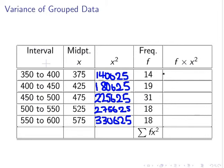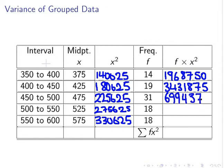So in the first instance, we're going to multiply 14 by 140625 and so on. So 1968750. Next one is 3431875. Next one is 6994375. Next one is 4961250.